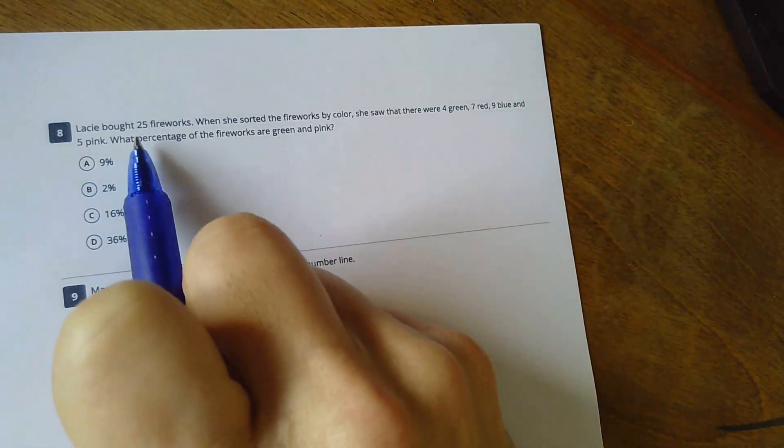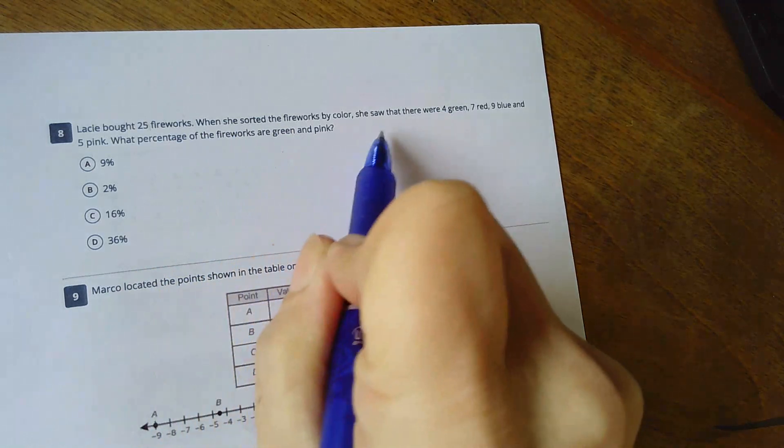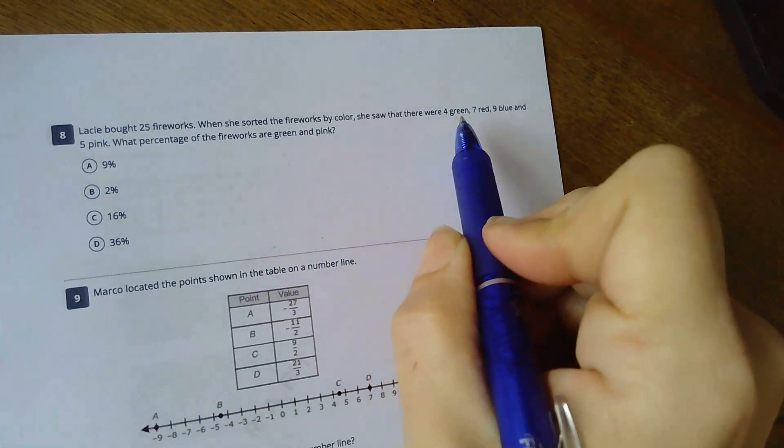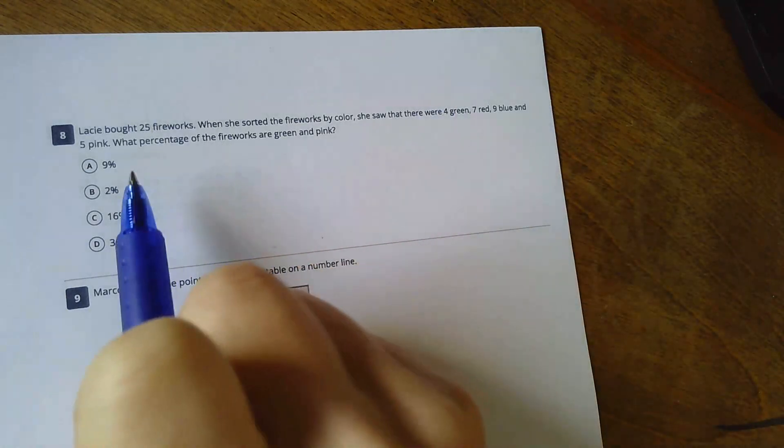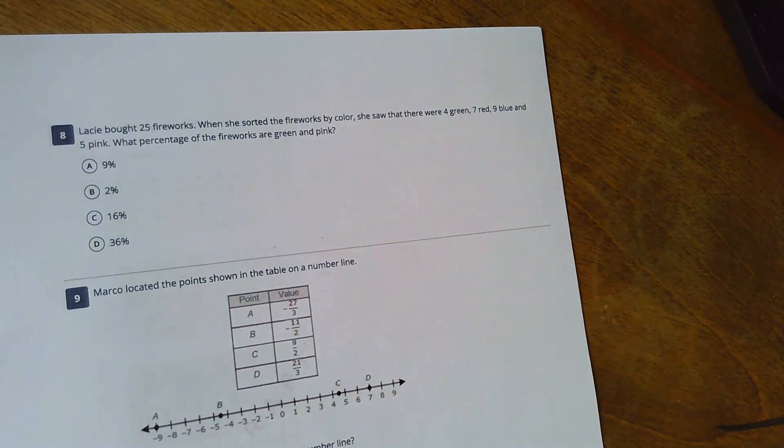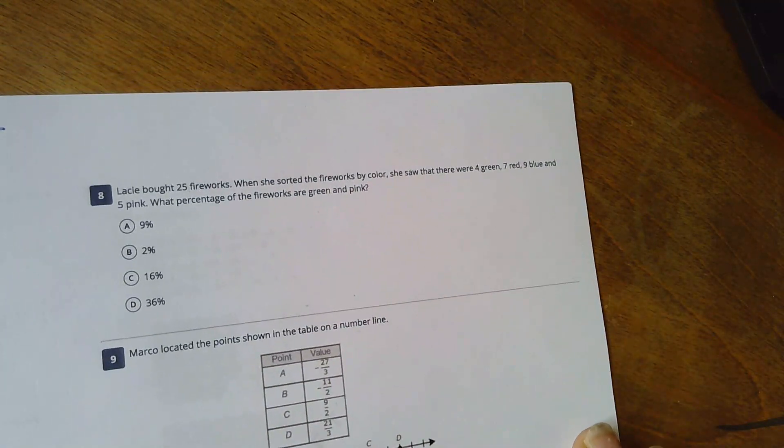Okay, we're at number eight. Lacey bought 25 fireworks. When she sorted the fireworks by color, she saw that there were four green, seven red, nine blue, and five pink. What percentage of the fireworks are green and pink? So this is a spiral back question.